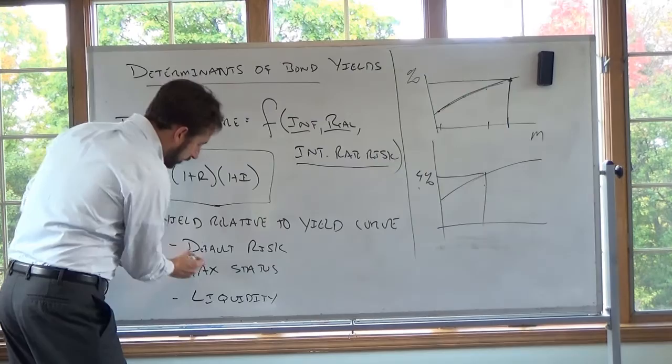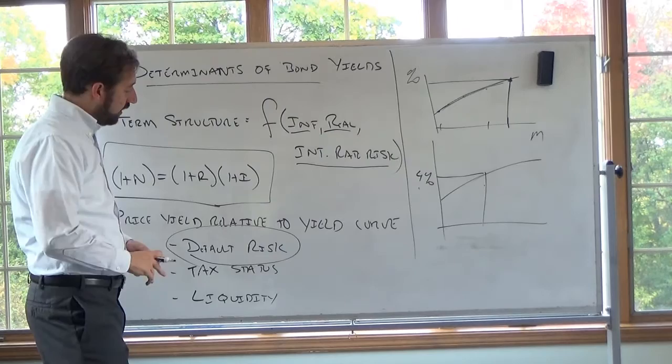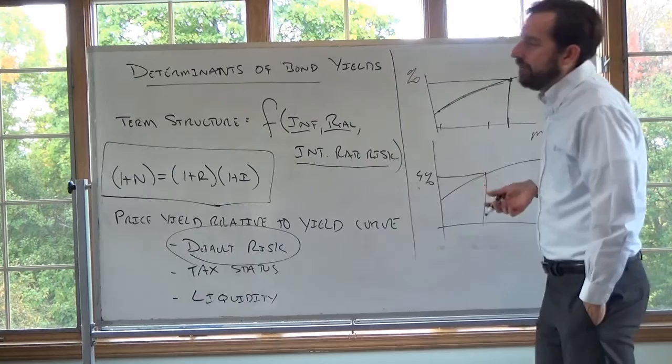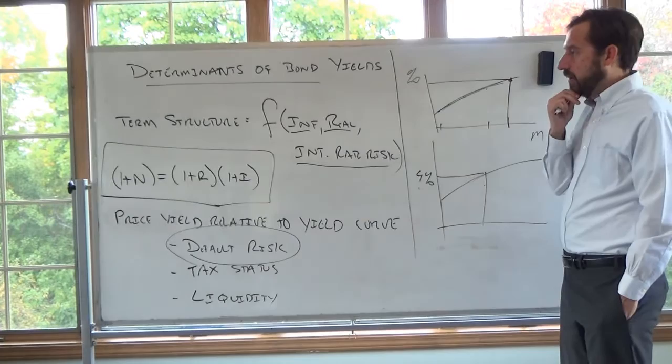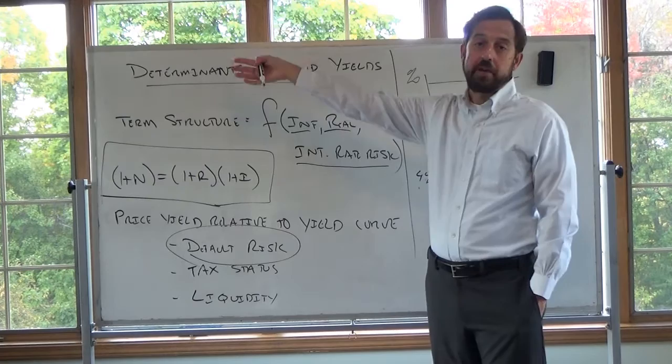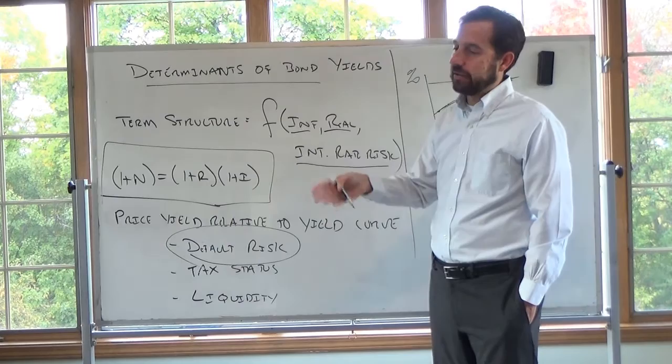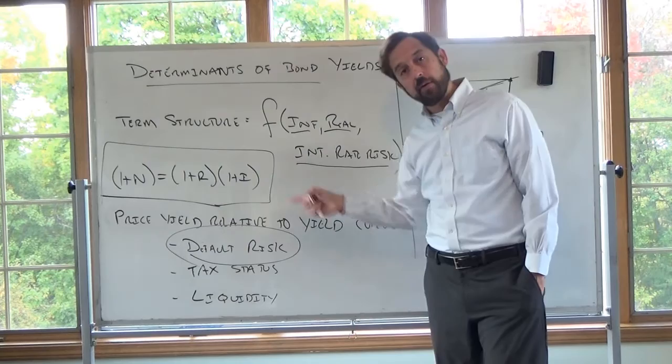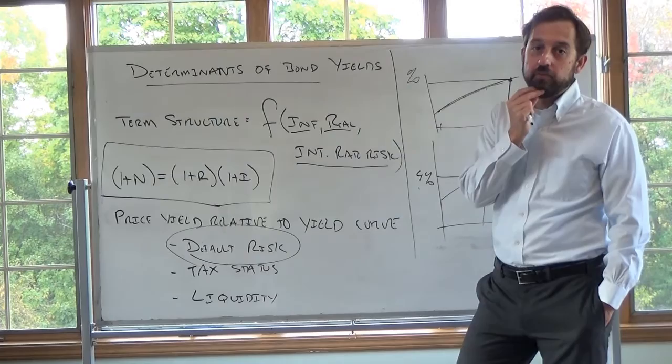By comparing the corporate bond to the treasury of the same maturity, we're controlling for inflation, real rate, and interest rate risk. The last thing to talk about is where we get a measure of default risk — this comes from bond ratings. How do you know to adjust for default risk by, say, 50 basis points? If it's rated triple-B, you look at similar triple-B bonds and say triple-Bs are trading for 50 basis points over treasuries at two years, and apply that same adjustment. That's generally how you do it, and why bond ratings become important.